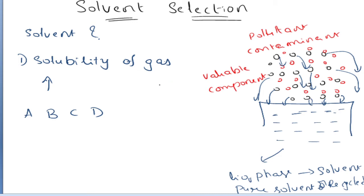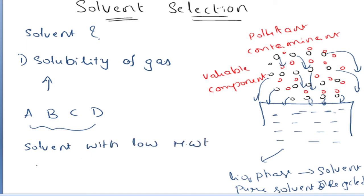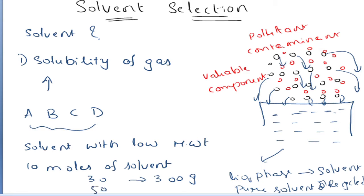If they are equally having the same affinity values towards the solute, then how do we choose among them? Then you can choose the solvent with a low molecular weight. For example, if you require 10 moles of solvent for a particular separation, and your molecular weight is 30 then you need 300 grams, but if it is 50 you need 500 grams. So selecting a solvent with a low molecular weight reduces the quantity of solvent required for the separation.